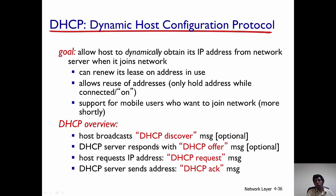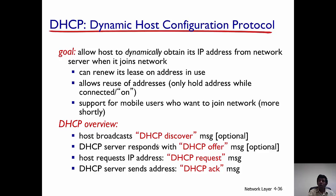The goal of DHCP is to provide hosts IP addresses from the network server whenever the host joins the network, and it also helps hosts renew their IP addresses. It supports mobile users because if there are mobile users who want to join the network, they need an IP address only for a short duration of time. Once the hosts leave the network, this IP address can be used for some other host which then enters the network.